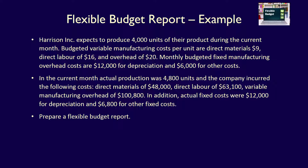Harrison Inc. expects to produce 4,000 units of their product during the current month — let's say it's January. Budgeted variable manufacturing costs per unit are: direct materials $9, direct labor $16, and overhead $20. Monthly budgeted fixed manufacturing overhead costs are $12,000 for depreciation and $6,000 for other fixed costs. In the current month, actual production was 4,800 units, and the company incurred: direct materials of $48,000, direct labor of $63,100, variable manufacturing overhead of $100,800. Actual fixed costs were $12,000 for depreciation and $6,800 for other fixed costs.